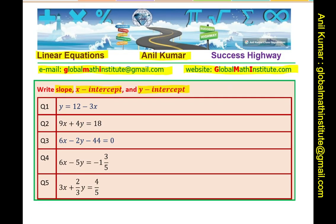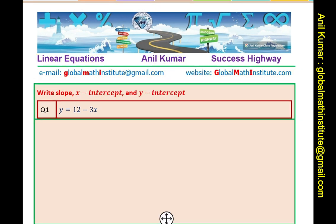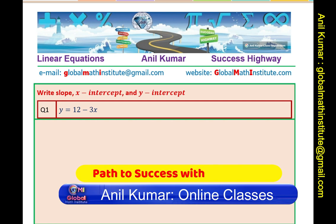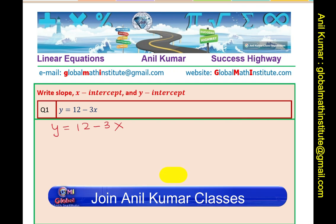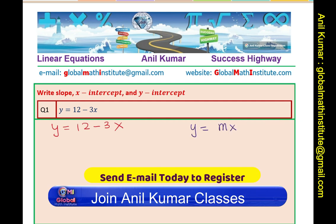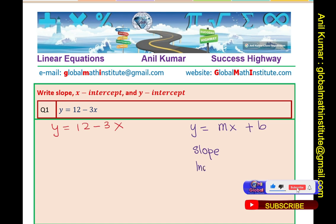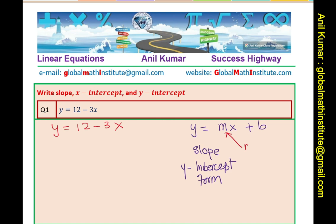Let's begin from question number one. The first question gives us the equation y = 12 - 3x. We need to find the slope, y-intercept, and x-intercept. To do that, let's understand the slope-intercept form y = mx + b, where the coefficient of x, letter m, is the slope of the line and b is the y-intercept.